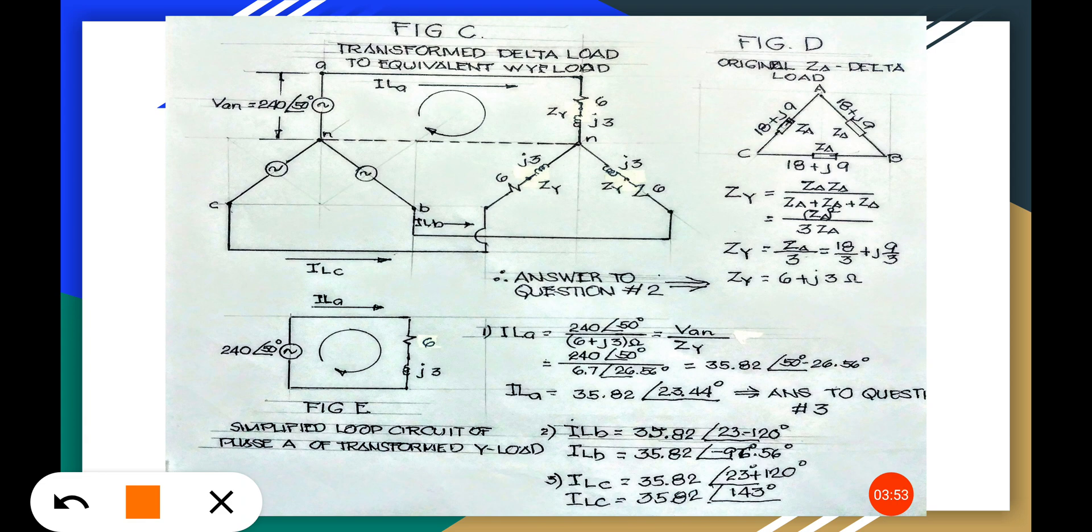We have to find the Zy impedance. What's this? We have to get any two phases here in the delta, multiply them together, times z times z, divided by the summation of the three phases.